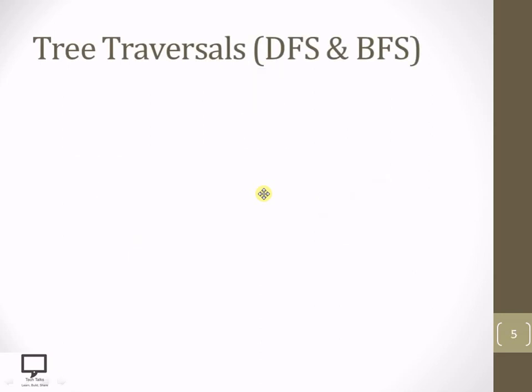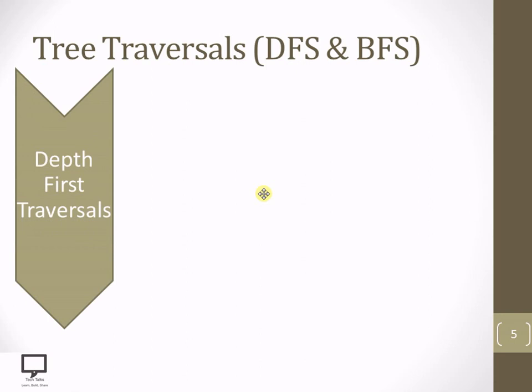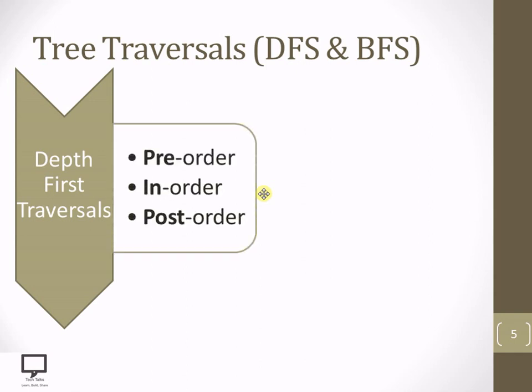Now let's start with tree traversal techniques. As all of you know, tree is a non-linear data structure, and any non-linear data structure can be traversed in two different ways: DFS and BFS. DFS stands for Depth First Search Traversal and BFS stands for Breadth First Search Traversal. DFS, as the name suggests, goes into depth and then traverses all the nodes present in the tree data structure.